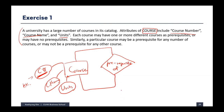The last thing is defining cardinality. The business rule says each course may have one or more different courses as a prerequisite. Thinking from the course perspective and then the prerequisite course perspective — I am a course, and I can have a maximum of many other courses as prerequisites.